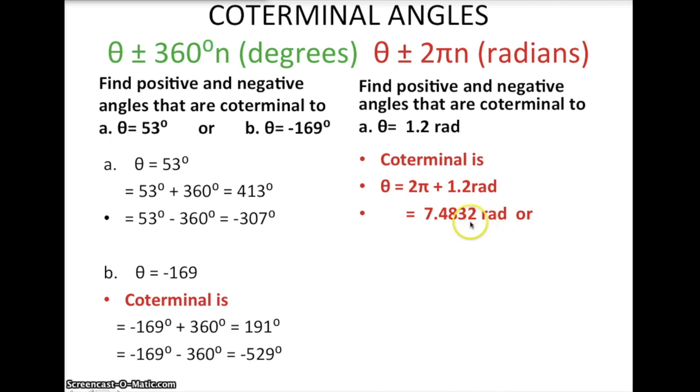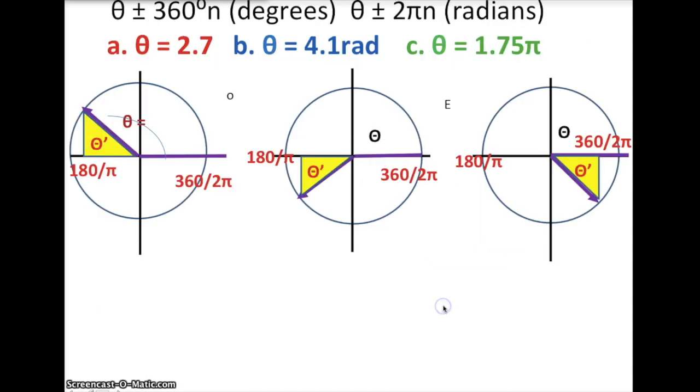This is not a number we recognize very well. A radian doesn't often have a rad on the end of it. It just has theta equals. If we want to subtract, go in the negative 2π direction. That would give us negative 5.0832. And of course, that decimal goes on.